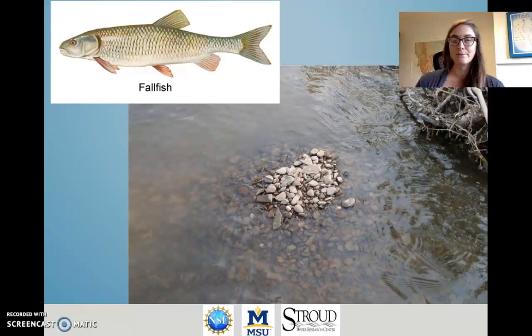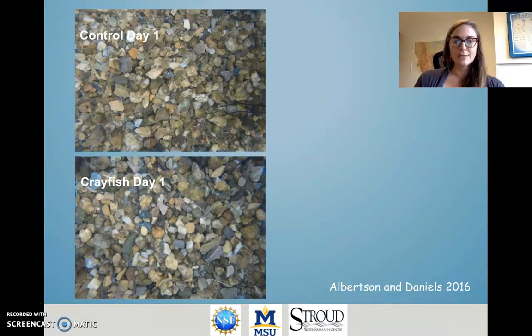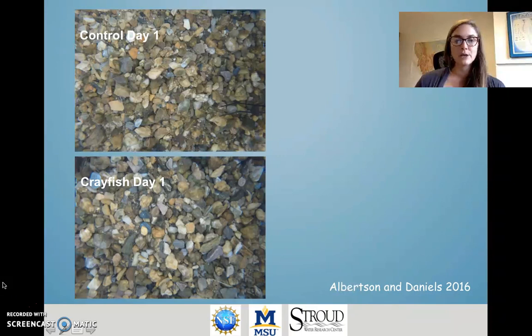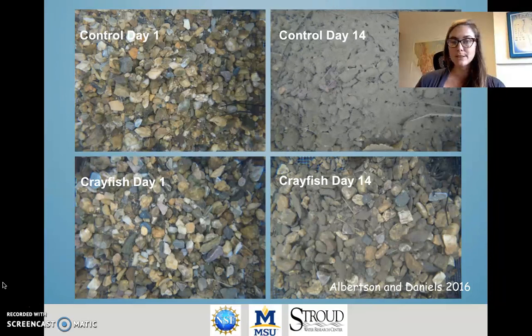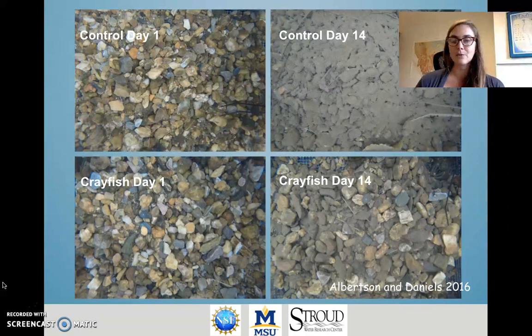Crayfish also move rocks around with their claws. These pictures are from an experiment taken from above in Pennsylvania, where the river has high fine sediment pollution. The pictures are taken on day one for control treatments — shown in the top picture — which do not have crayfish, to compare fine sediment accumulation against cages that did have crayfish present. Two weeks later, a large amount of fine sediment built up in the controls compared to the crayfish cages. This is attributed to crayfish using their claws to move gravels around, disturbing fine sediment up into the water column where it is then transported downstream.